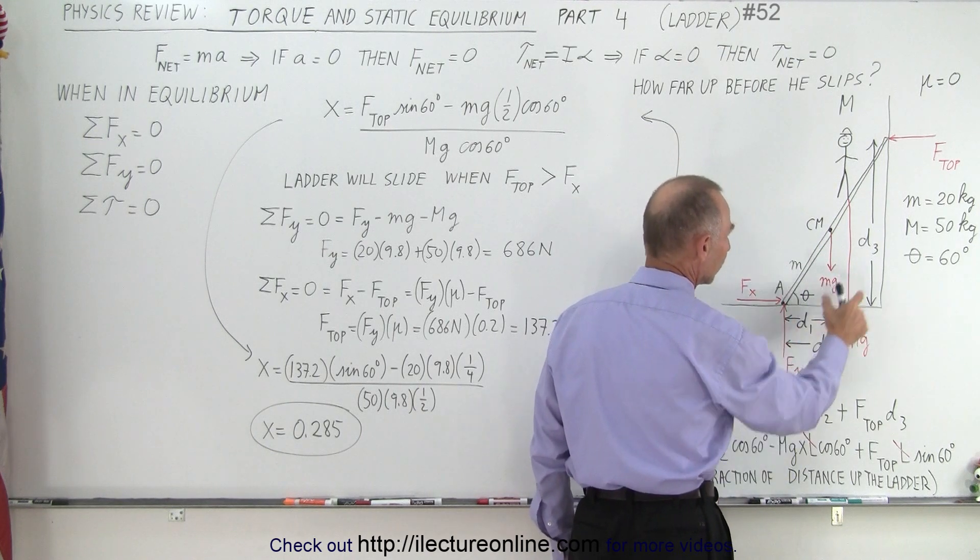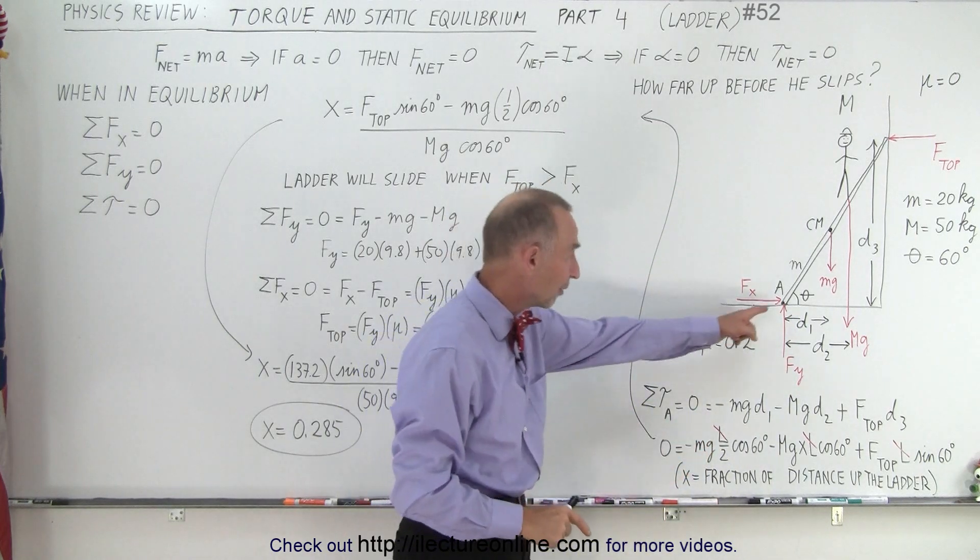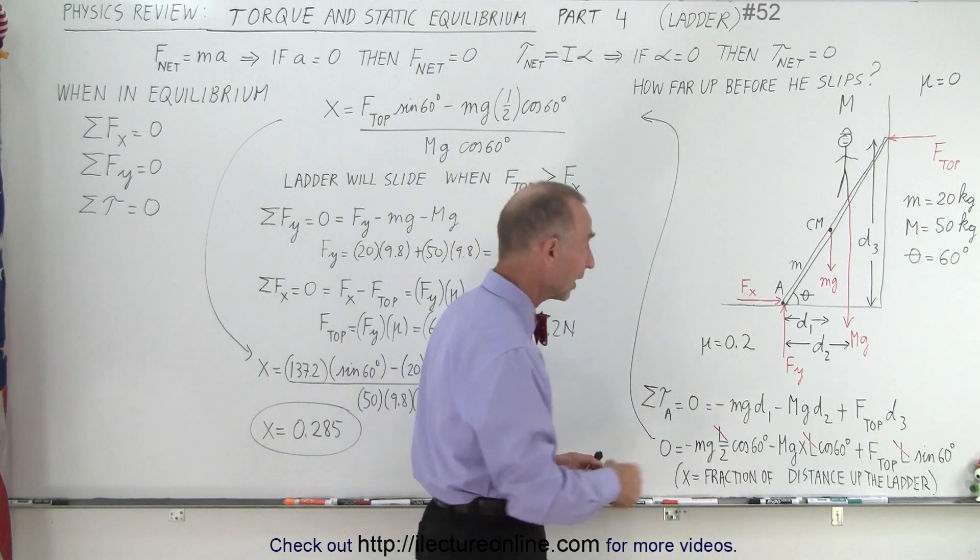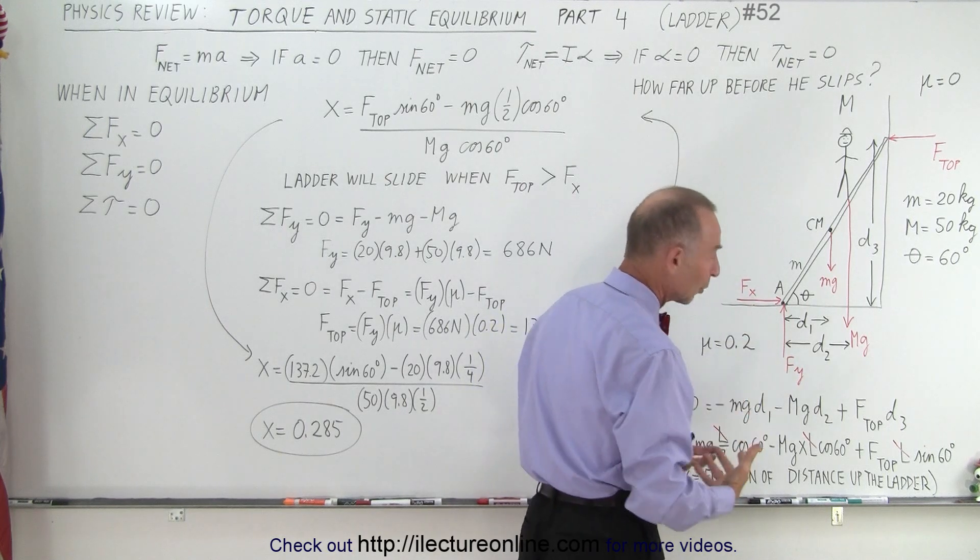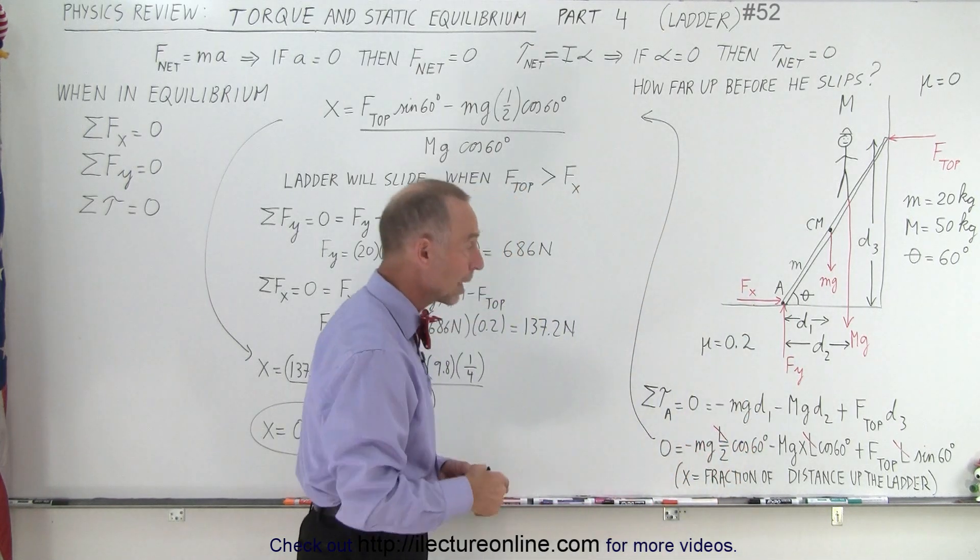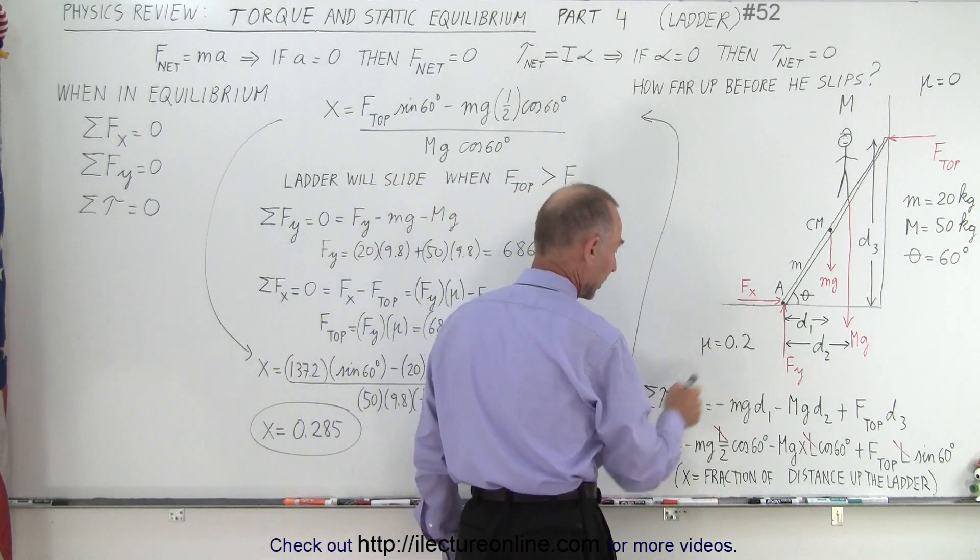Notice the distances d1, d2, and d3 assuming that our point of rotation is going to be chosen at the very bottom here. The reason why we choose that is because we have two unknown forces F sub x and F sub y which we at this point don't know yet. So again we use the sum of all the torques about this point equal to 0.